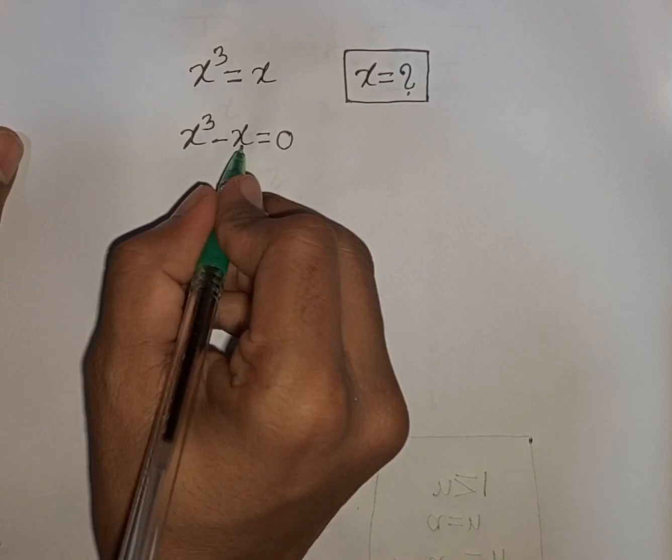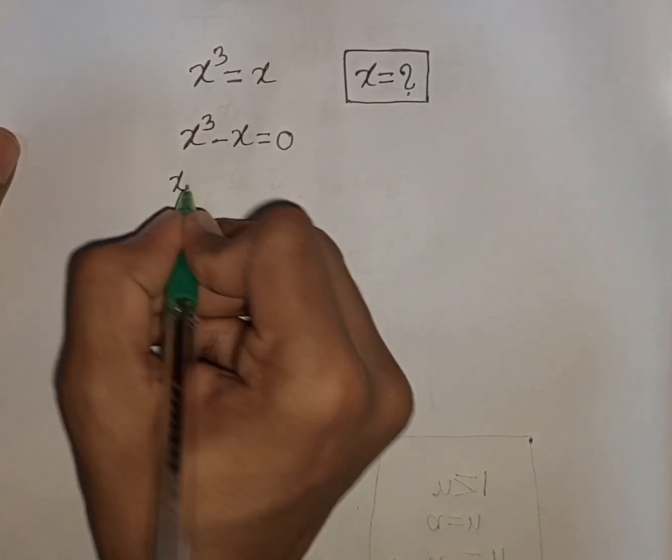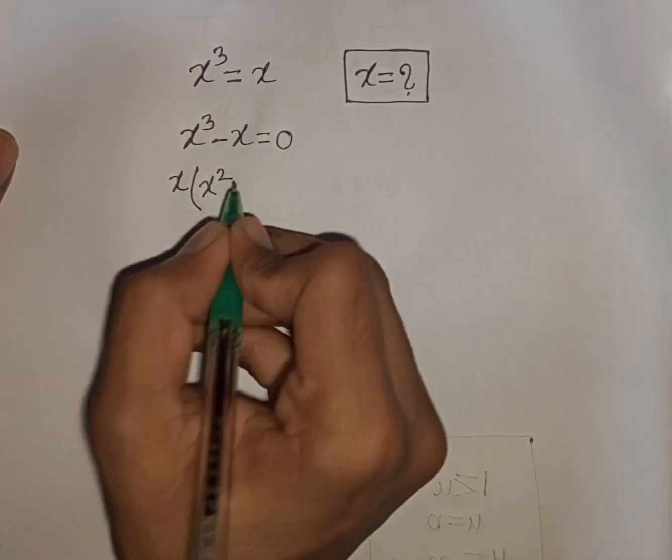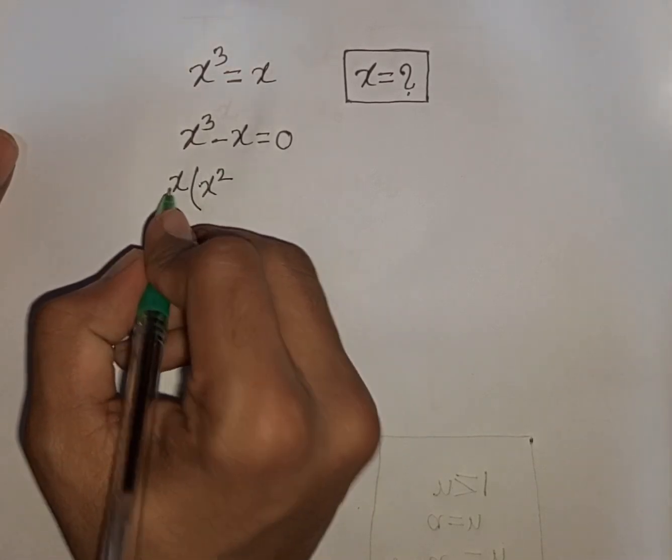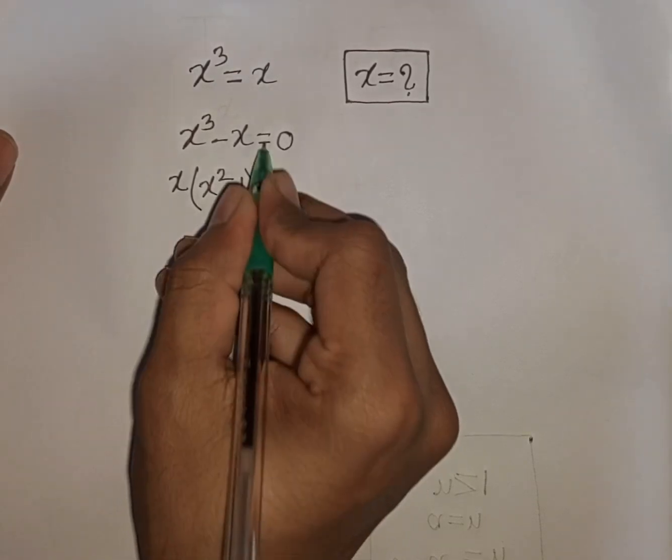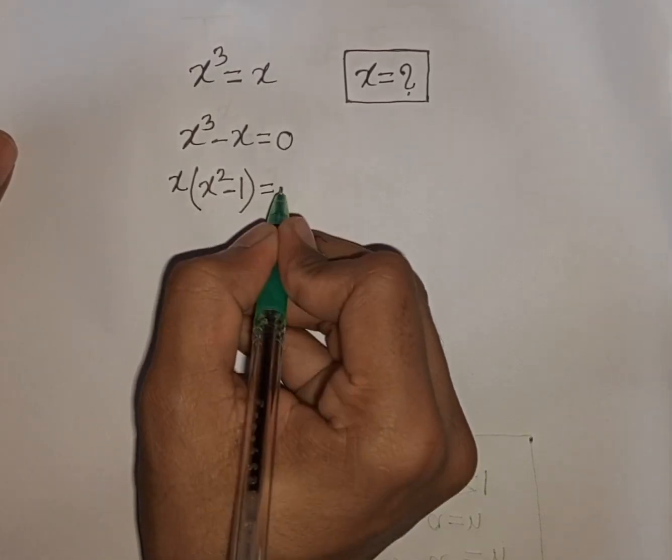Here I take common, x is common. So x is out of the bracket. This divided by this, that means it will be x square, then minus x divided by x, that means it will be minus 1, then bracket close is equal to 0.